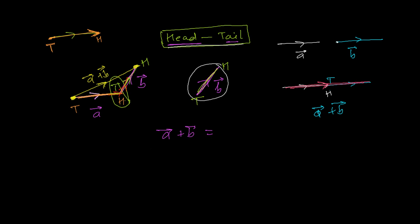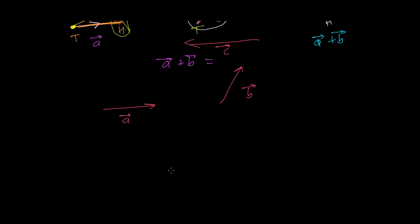What if we have three vectors? The same formula works — head to tail, head to tail. Let's say I have vector A, vector B, and vector C. I write vector A, and the head of A connects to the tail of B, so I grab B and connect it here. That's the first step: head of A joined to tail of B. Then the head of B is added to the tail of C, so I add vector C here.